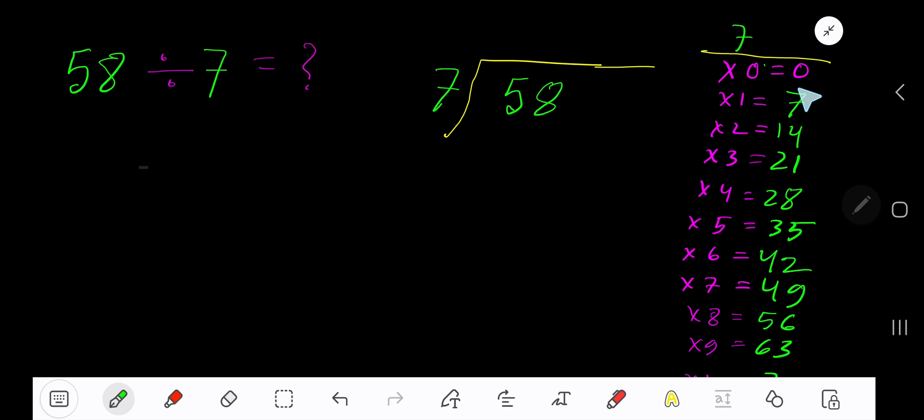To find the multiplication table of 7, just add 7 to the previous result: 0 plus 7 is 7, 7 plus 7 is 14, 14 plus 7 is 21, 21 plus 7 is 28. This process continues. 7 goes into 5 how many times?